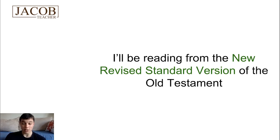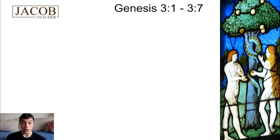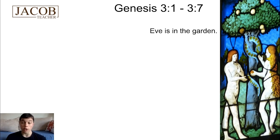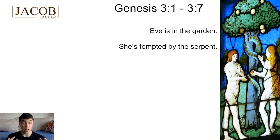We're going to read from Genesis chapter 3, verses 1 to 7 — just a short portion of text. This is part of the creation story. In these verses, we're going to see Eve in the garden, and then she's tempted by a serpent. Now a serpent in English is just a snake. So if you see the word serpent, all that means is snake.